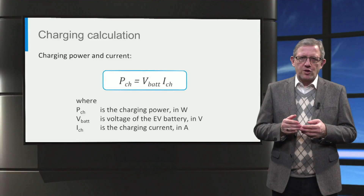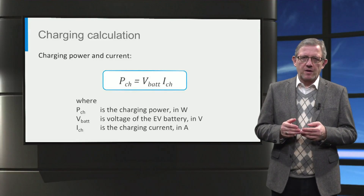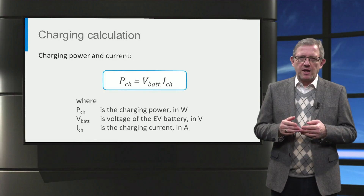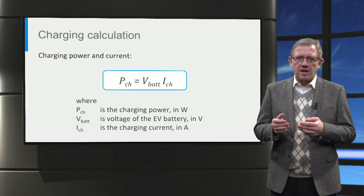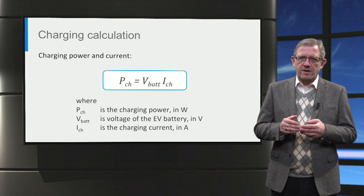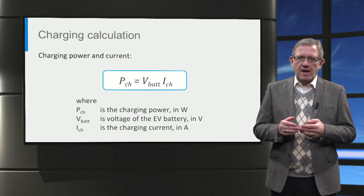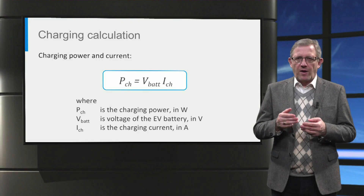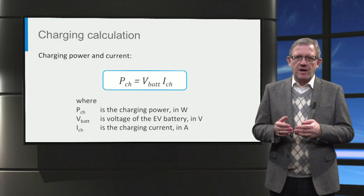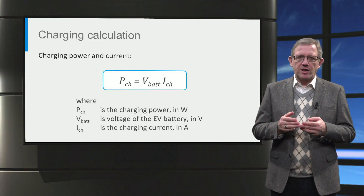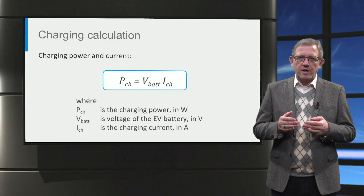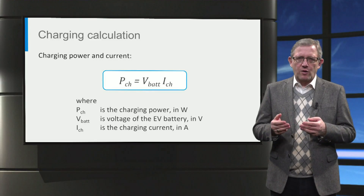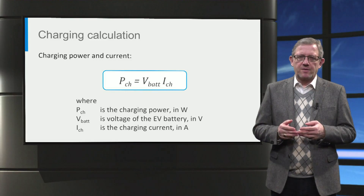Let us now look at a few general equations for charging. First, the charging power, P-charge, is the product of the charging current and the battery voltage, V-bat. A battery is hence charged by controlling the charging current. Therefore, faster charging can be achieved by increasing the charging current. Typical units used for electric vehicle charging power are kilowatts, volts for voltage and amperes for current.